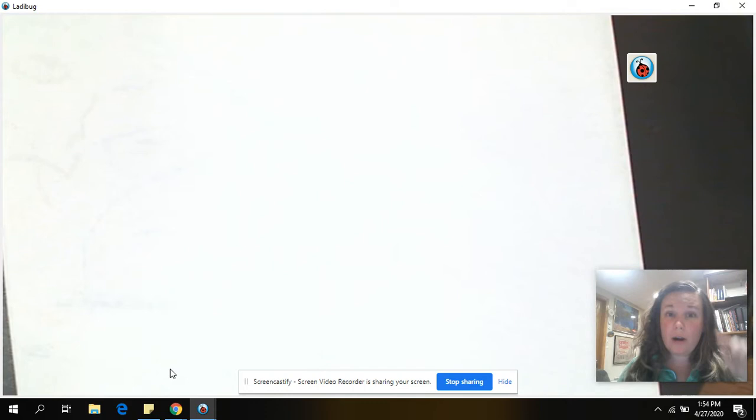So after we visualize it, we're going to repeat the problem together. So read it with me. Mila collected blank sticks by the pond on Tuesday and blank sticks on Thursday. On the way home, blank sticks fell out of the wagon. How many did she have when she got home?